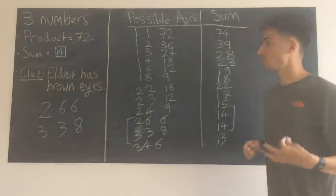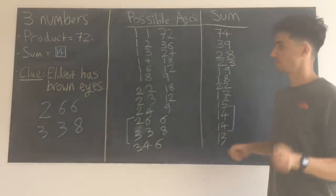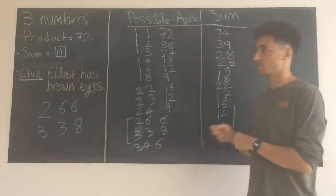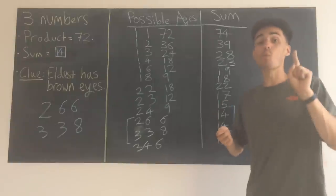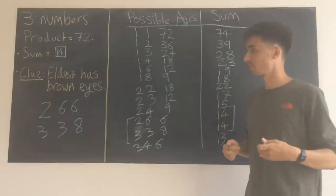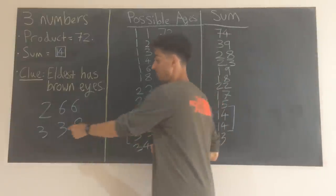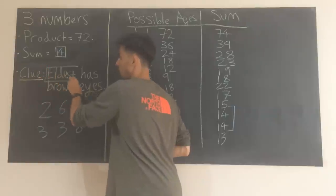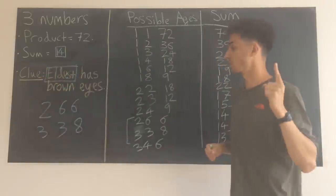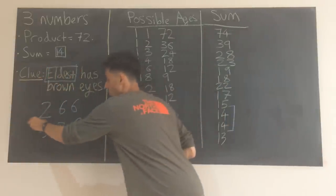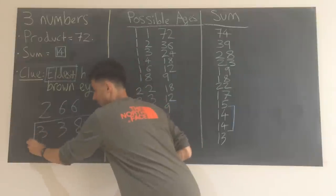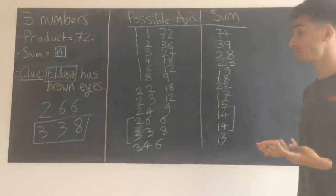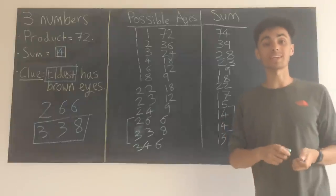The clue is going to help us decide which one's right. Because the eldest daughter has brown eyes. Well, that implies there must just be one eldest daughter. And it has to therefore be the 3, 3, 8 option. Because that's the only option with just one eldest daughter. So what we think is that this is our right answer. That's how the mathematician found 3, 3 and 8.